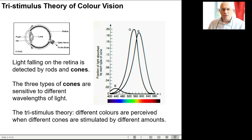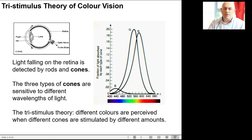While pure spectral colors are perceived from a single wavelength, many colors are perceived from a combination of different wavelengths, and different amounts generate different colors.